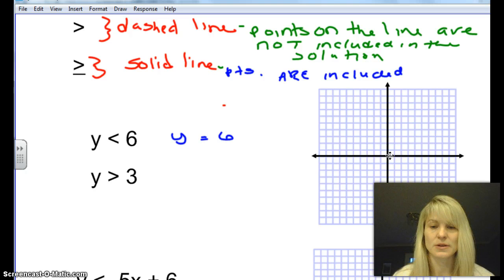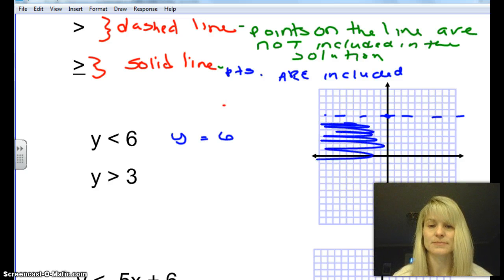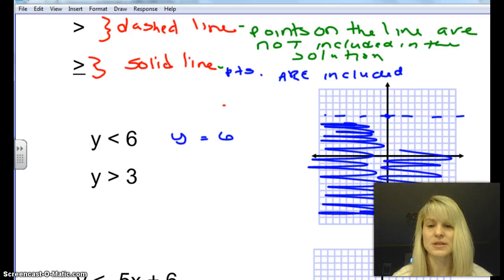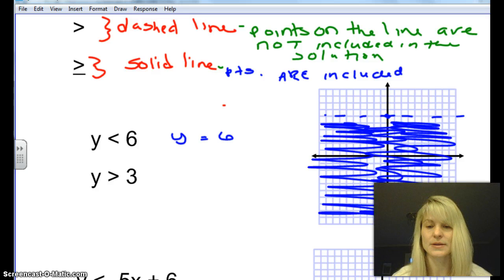So we have y equals 6. So we're going to look for the 6 on the y. So 1, 2, 3, 4, 5, 6. And then it's right here. And there's no slope. So that should tell you that this is going to be a horizontal line. And there's no equals to, so that's going to tell us it's going to be a dashed line here. And then it says y less than 6. Well, 5 is less than 6. All these down here are less than 6. So I'm going to shade the region underneath it.